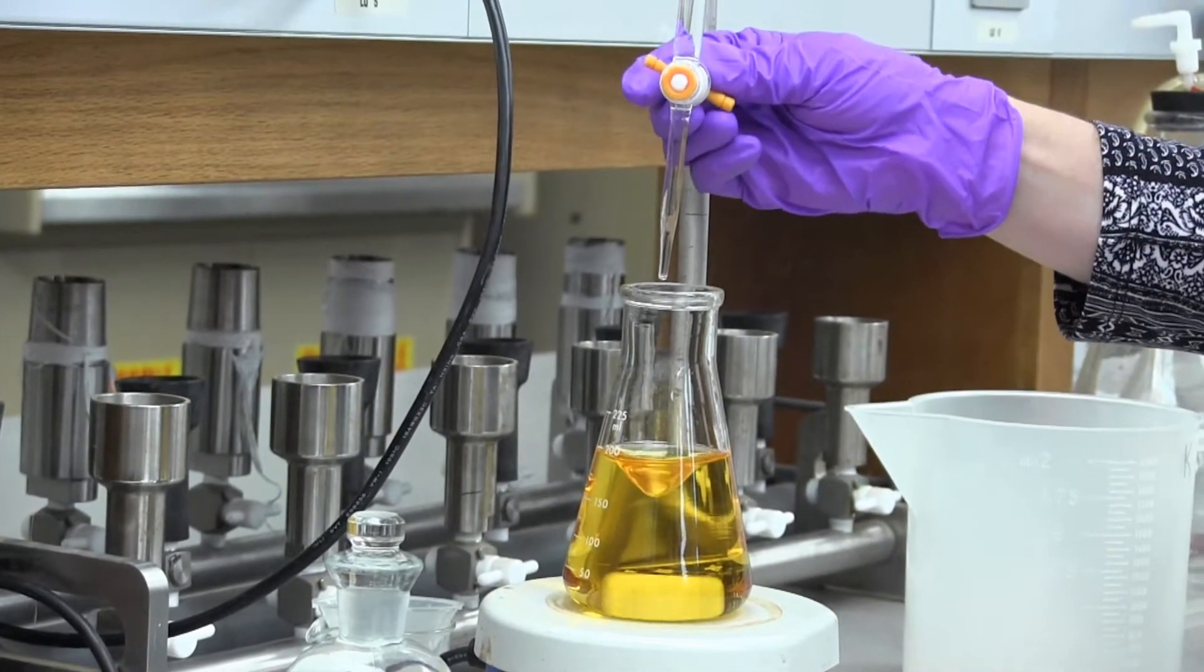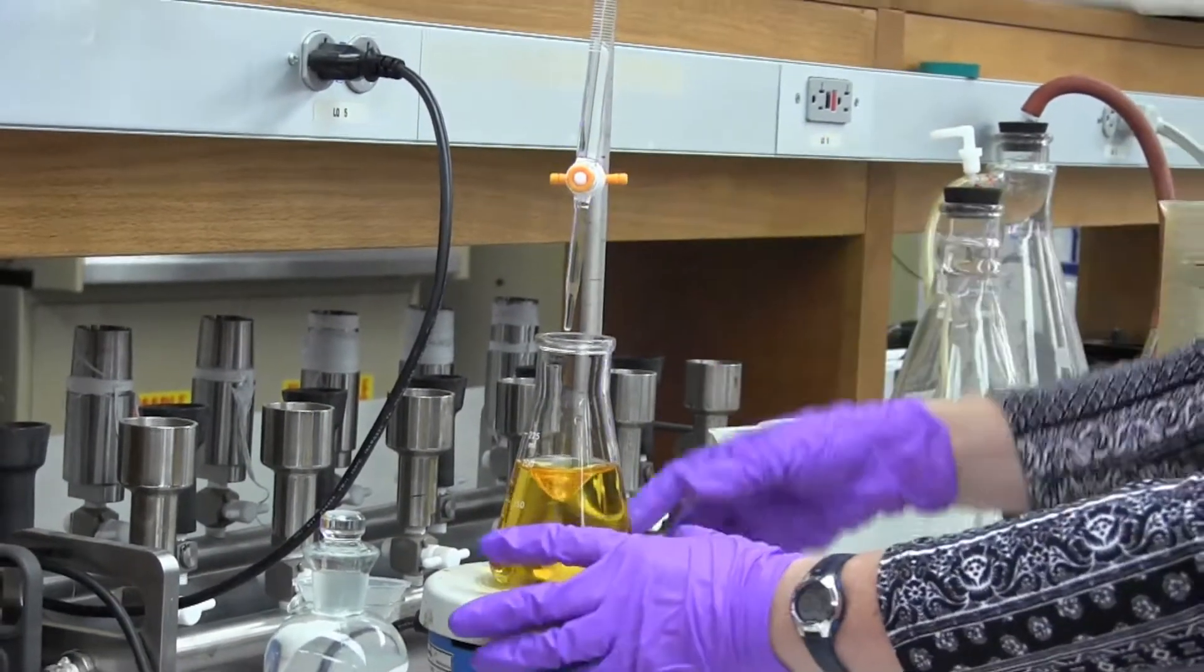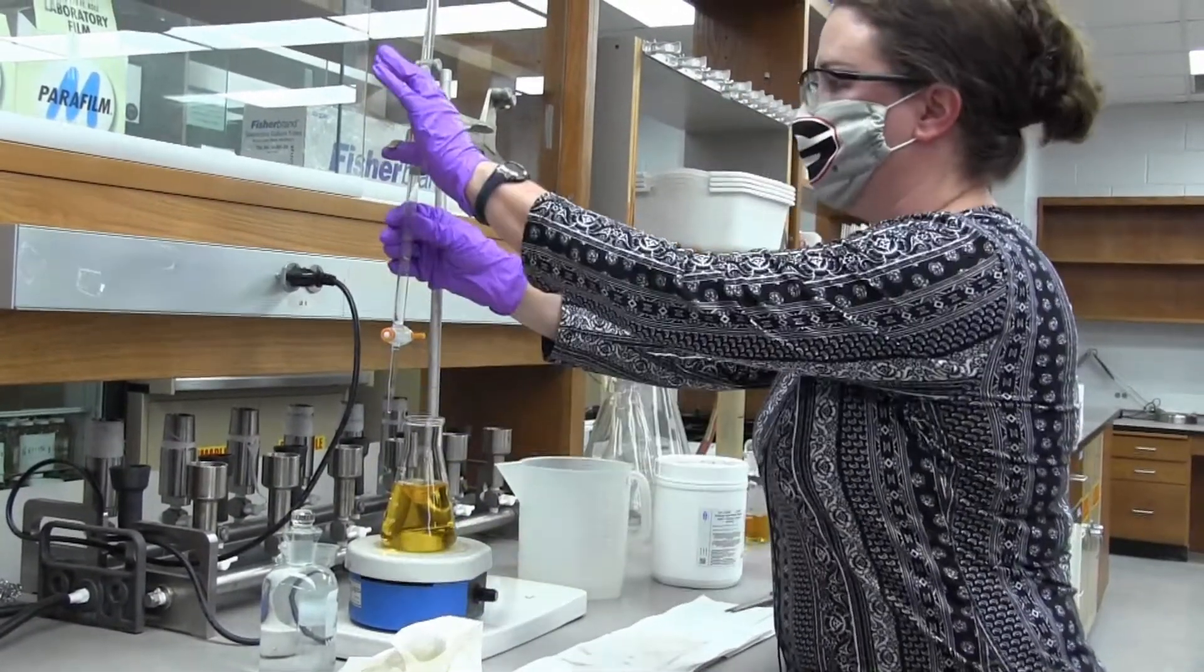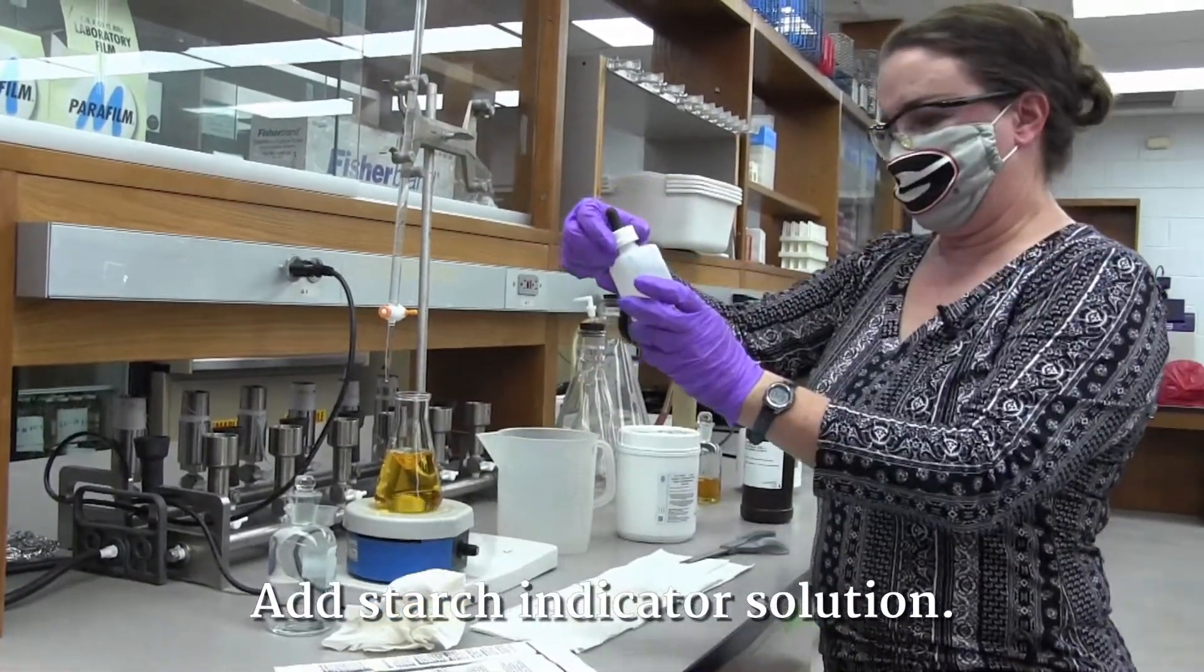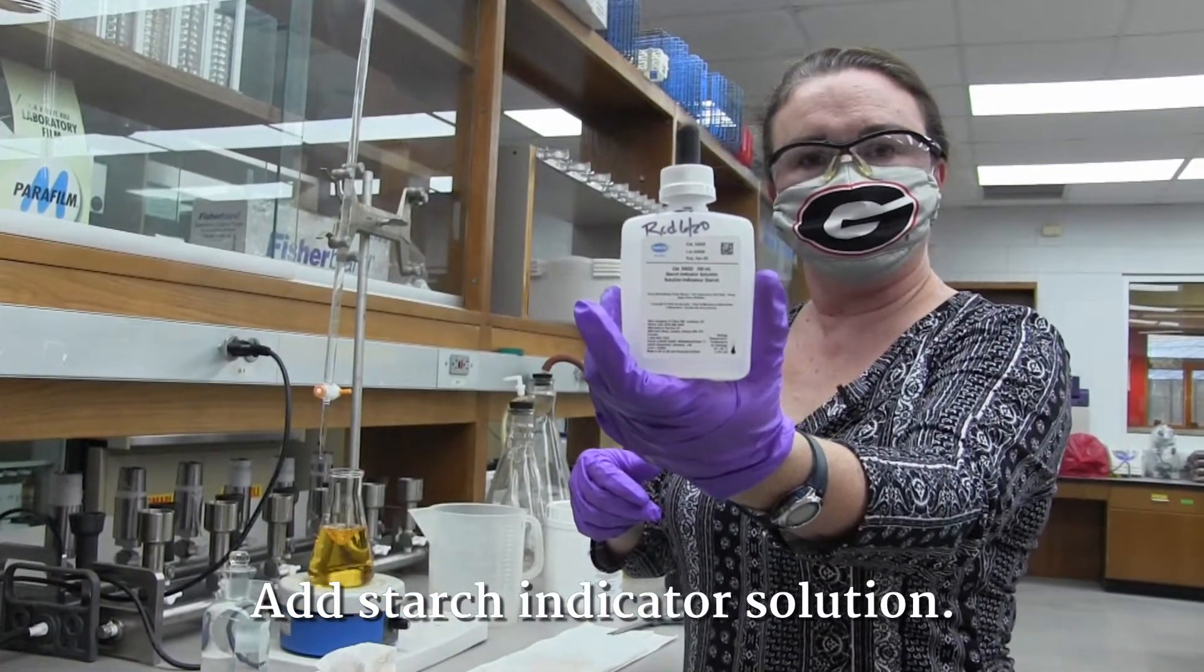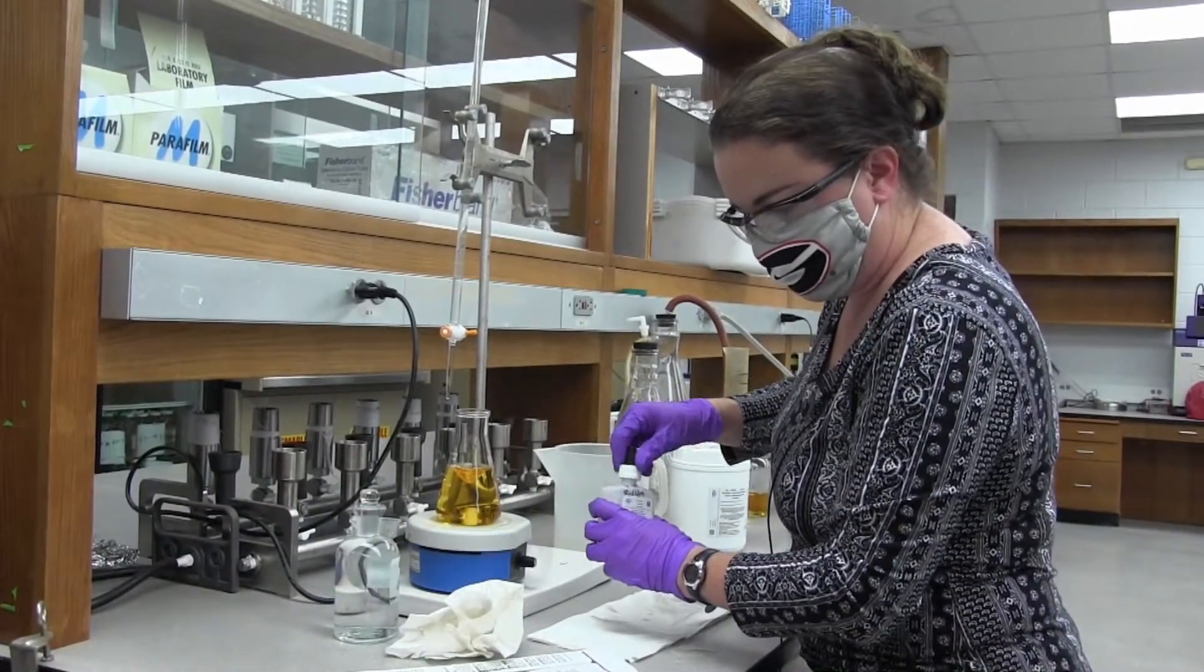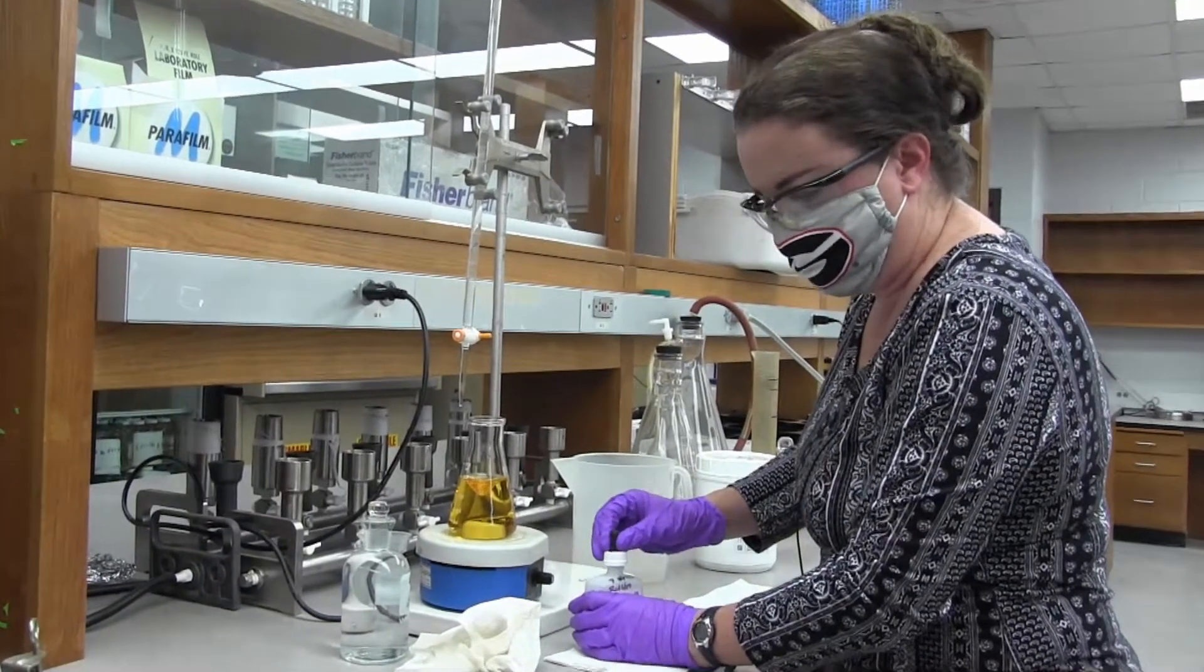Now we're going to add two dropper fulls of starch indicator solution and we're going to keep swirling it to mix. Here's our starch indicator solution. We're going to put two dropper fulls of this in there. We're going to see a dark blue color now.